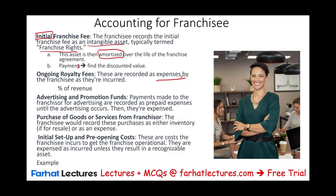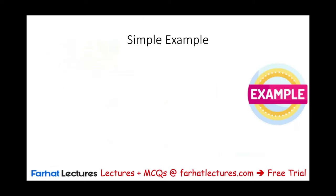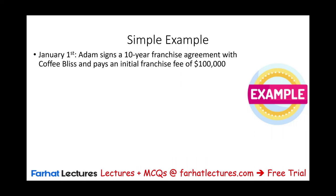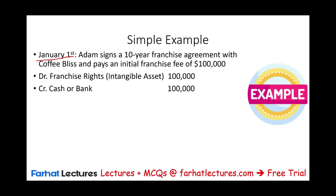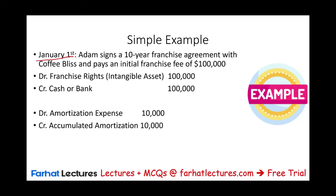The best way to illustrate all these is to work an example. First, a simple example. On January 1st, Adam signs a 10-year franchise agreement with Coffee Bliss and pays an initial franchise fee of $100,000 as a lump sum. We debit franchise rights (an intangible asset) $100,000 and credit cash $100,000. This franchise fee is for 10 years, so every year we debit amortization expense $10,000 and credit accumulated amortization $10,000. Simply put, the intangible asset is getting amortized.